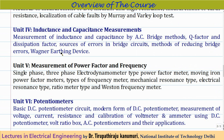Module 4 covers measurement of inductance and capacitance using AC bridge methods. We will discuss the Q factor, dissipation factor, sources of errors in bridge circuits, and different methods of reducing those errors. We will also cover the Wagner earthing device, which falls under this category.